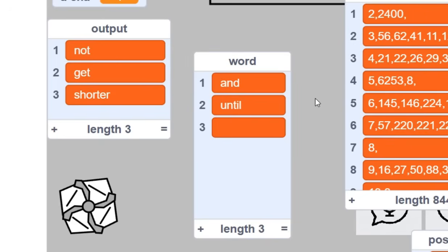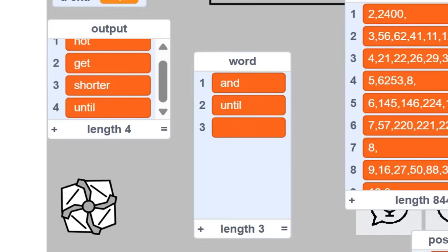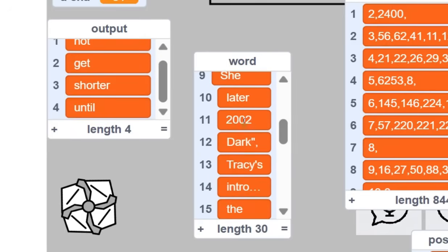And the possible words to come after shorter are and, until, and nothing. So now it will just go and pick one of those, and it picked the word until. And then after the word until, the words are the, his, modern, later, all these words. So then basically it'll just keep on picking one of the possible words over and over again.